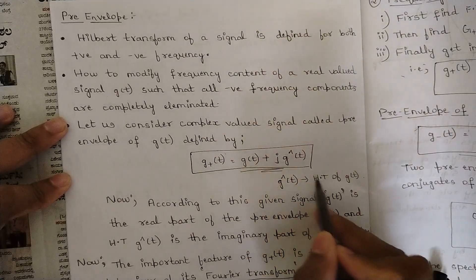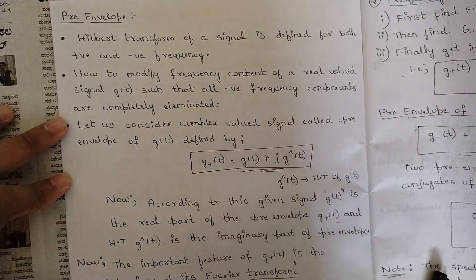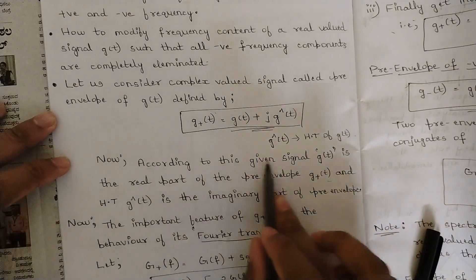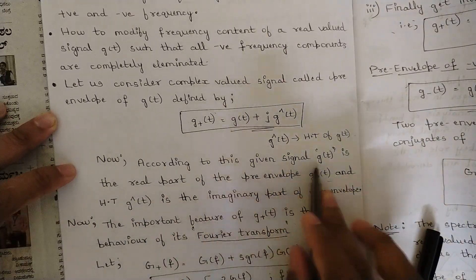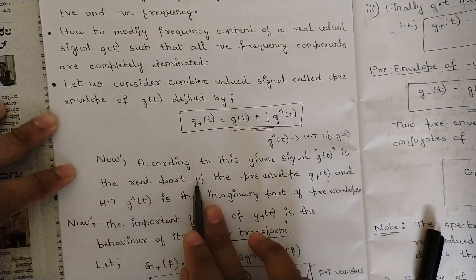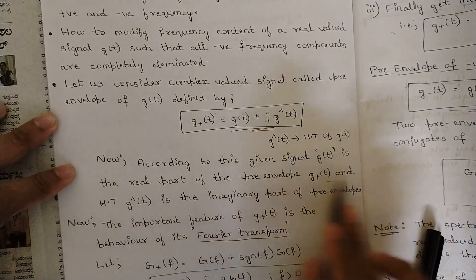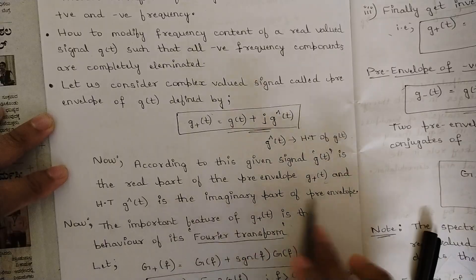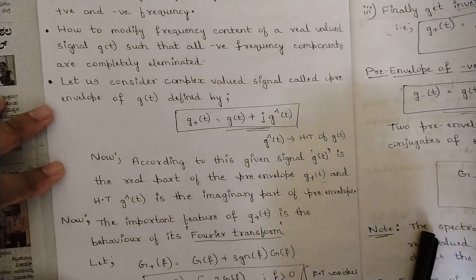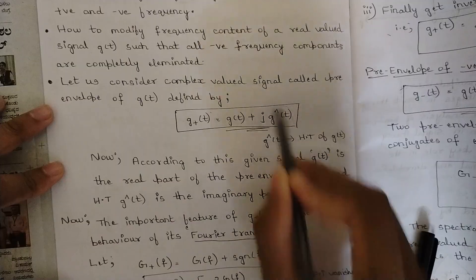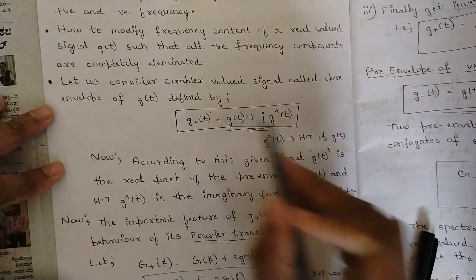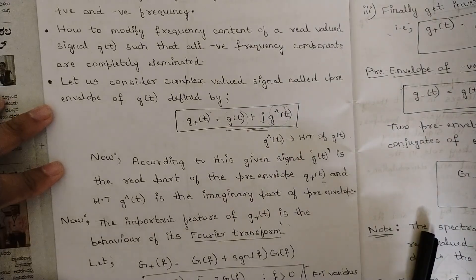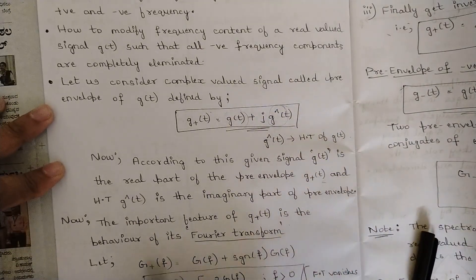Here ĝ(t) is the Hilbert transform of the function g(t) — that is the real-valued signal which we have considered. According to this, the given signal g(t) is the real part of the pre-envelope G+(t), and ĝ(t), the Hilbert transform of g(t), is the imaginary part of the pre-envelope.